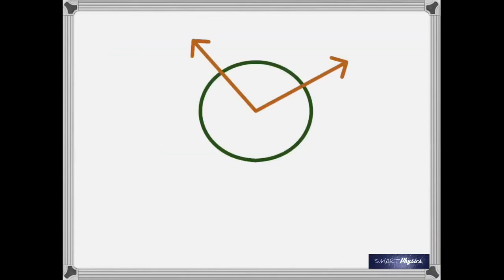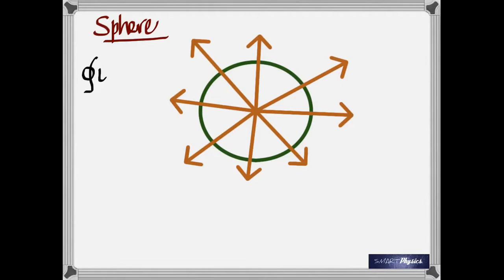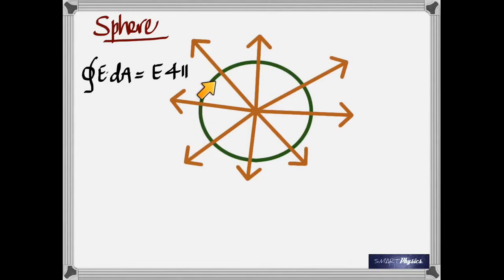Let's apply Gauss's law to a particular case. There is a point charge at the center of an imaginary sphere — all lines going out, so it's positive. According to Gauss's law, let's take any point on the sphere: it's at equal distance from the point charge at the center. Therefore E would be constant at all these points, and we can take E out of the integration.